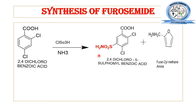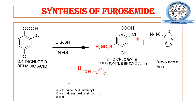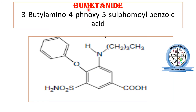In the next step, 2,4-dichloro-5-sulfonylbenzoic acid is further reacted with furfurylamine, also known as furan-2-ylmethanamine — a heterocyclic methylamine. This amine attacks at the appropriate position, and the product formed is furosemide: 4-chloro-N-furfuryl-5-sulfonyl anthranilic acid. This is the final product formed by the reaction of 2,4-dichloro-5-sulfonylbenzoic acid with furan-2-ylmethanamine.